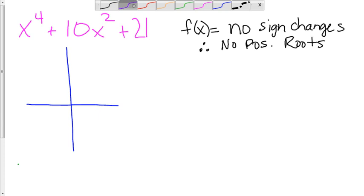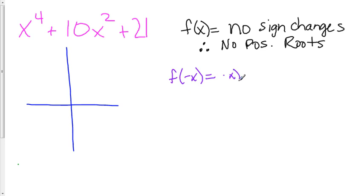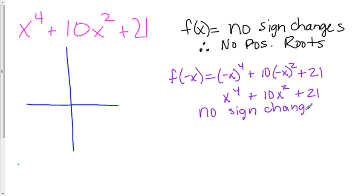If we then go to f negative x, it would be negative x to the fourth plus ten times the negative x squared plus twenty-one. It's not going to change that, not going to change this, and the twenty-one still stays there, which means still no sign changes, and therefore no negative roots.